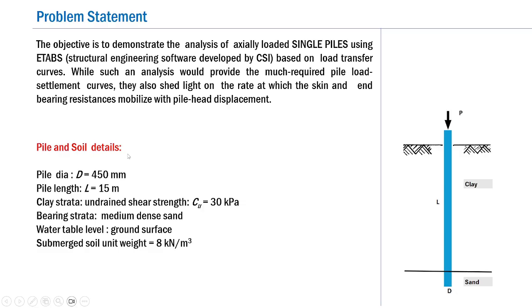Let us discuss the pile and soil parameters considered in this analysis. The pile is driven through a clay strata and the pile tip rests on a medium dense sand strata. The diameter of the pile is 450 mm and the pile length L is 15 meters. The undrained shear strength of the top clay strata CU is 30 kPa. The water table level is observed at the ground surface, and accordingly we will consider a submerged unit weight of 8 kN per meter cubed in our analysis.